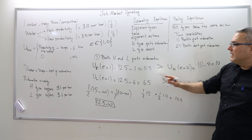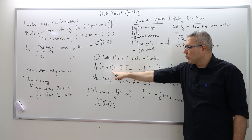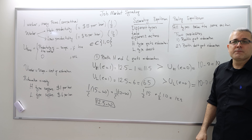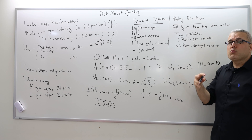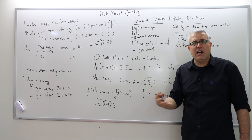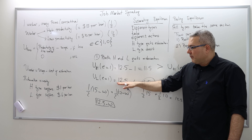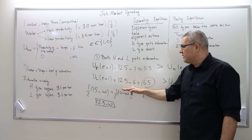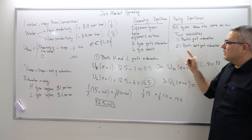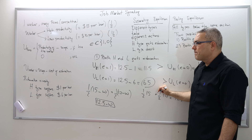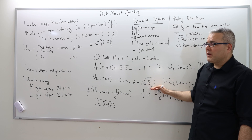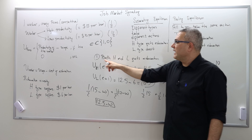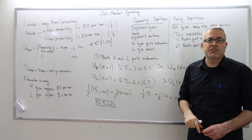The high-productivity guy prefers getting education (11.5) over no education (10). But the low-productivity guy prefers no education (10) over education (6.5). In the separating equilibrium, it was worth getting education because by mimicking the high-productivity guy the low type could make $15 per hour. But now, because the firm can't distinguish him, he's not making that much money, so it's not worth getting education. The low-productivity guy was preferring no education even in the separating equilibrium. The bottom line: we are not going to have a pooling equilibrium where both agents get an education.